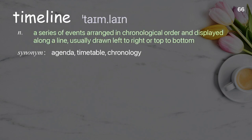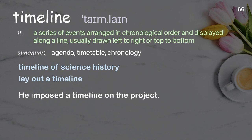Timeline: a series of events arranged in chronological order and displayed along a line, usually drawn left to right or top to bottom. Examples: timeline of science history, lay out a timeline. He imposed a timeline on the project.